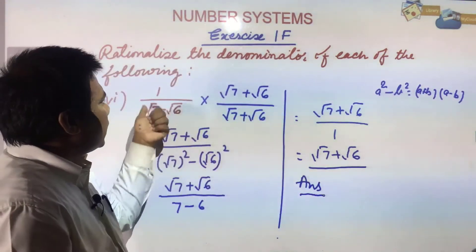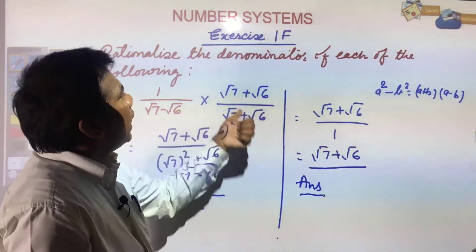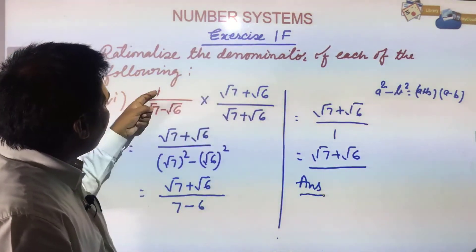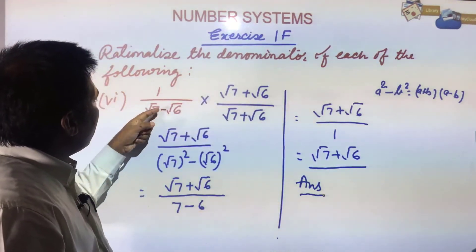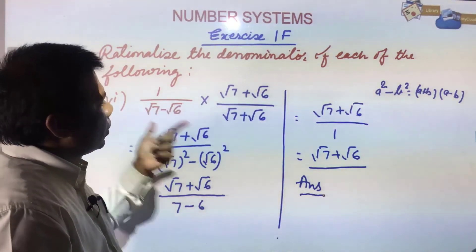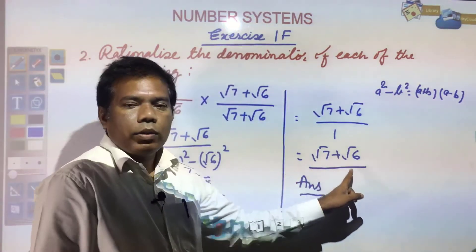So the rationalizing factor of √7 minus √6 is √7 plus √6, and if you are rationalizing 1/(√7 - √6) your answer will be √7 + √6.